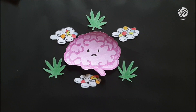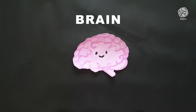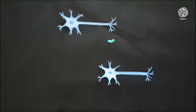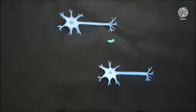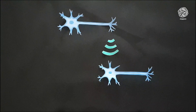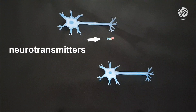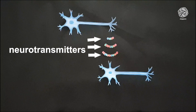First, let's take a look at how our brain works. The basic working unit of the brain is called a neuron. Neurons send signals back and forth to each other and to the rest of the nervous system. In order to do this, it releases neurotransmitters through the gap between it and the next neuron.